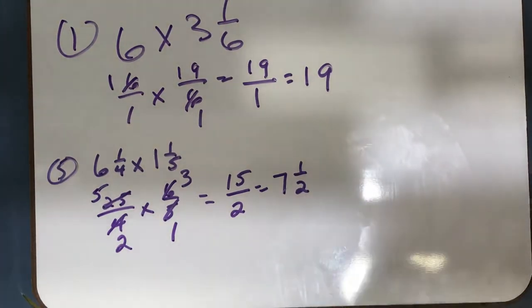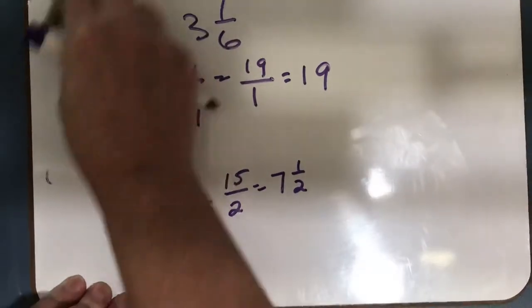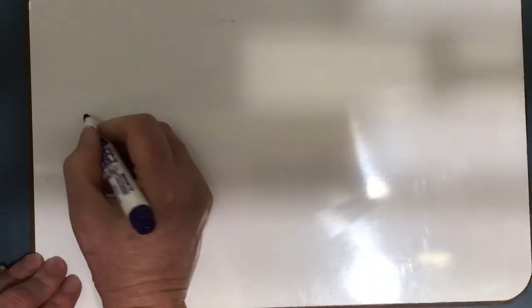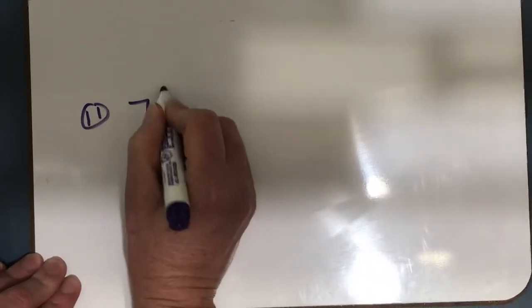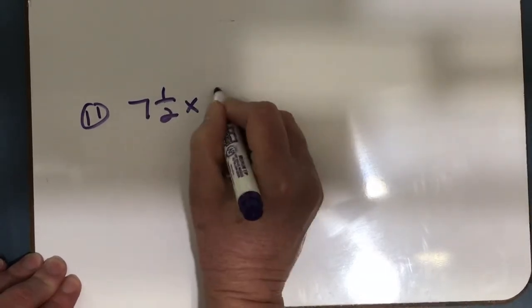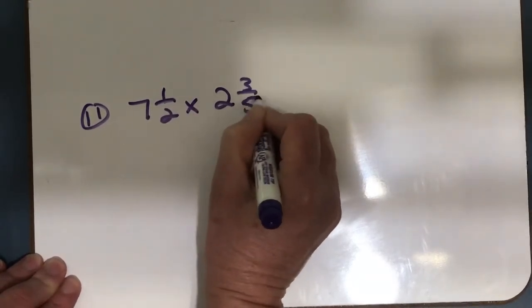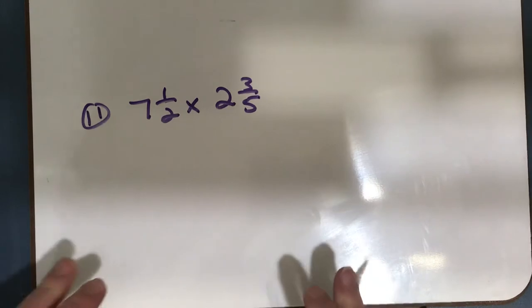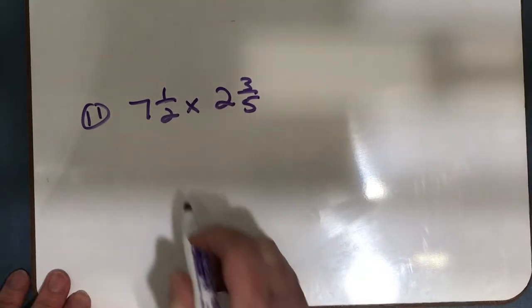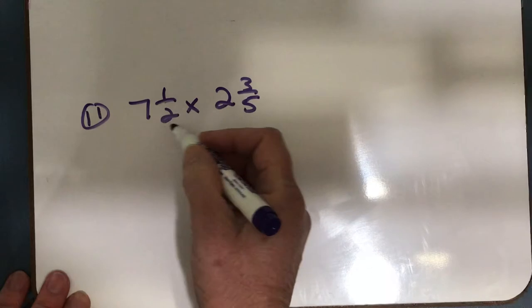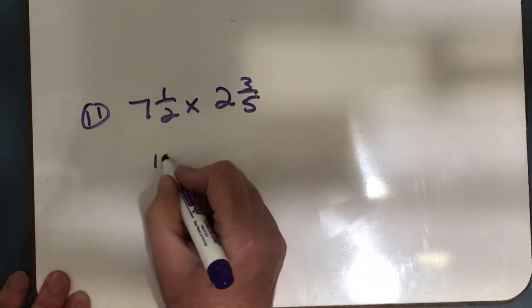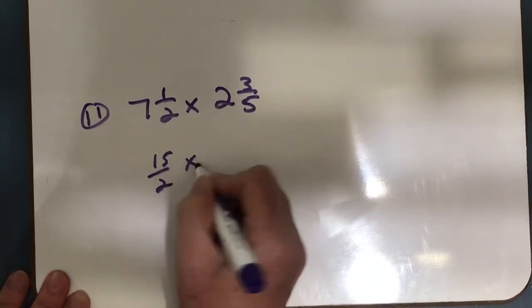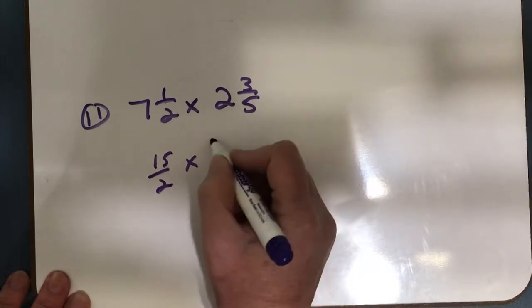Now I'm going to go to number 11: 7 and 1 half times 2 and 3 fifths. Two mixed numbers again, so I have to change both of them to improper fractions. 7 times 2 is 14 plus 1 is 15. And 2 times 5 is 10 plus 3 is 13, so 13 fifths.